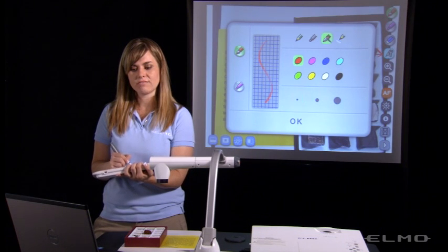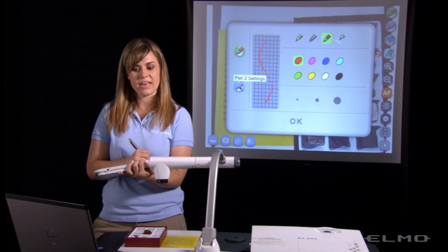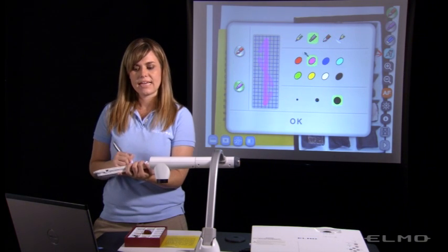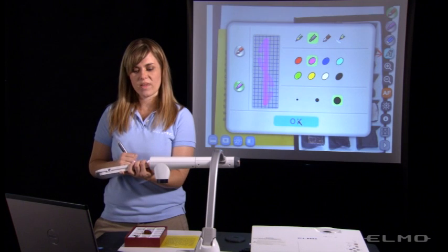I'm going to choose fountain pen. And then to choose the second pen, you'll select pen two. And then you can choose a different type or a different color. We're going to select a purple highlighter. When you're finished, click OK.